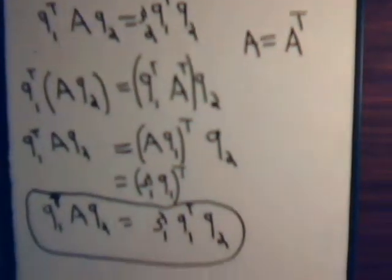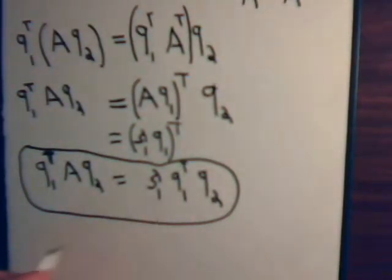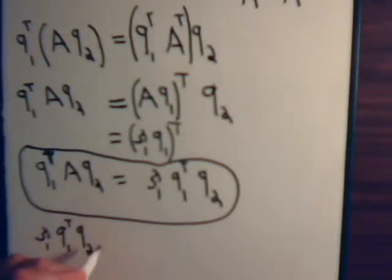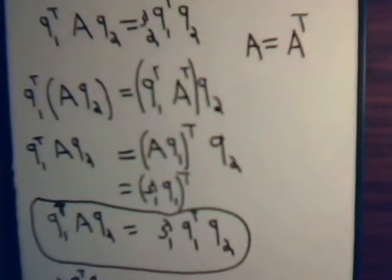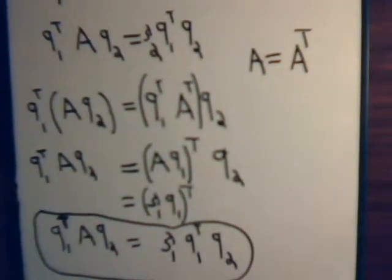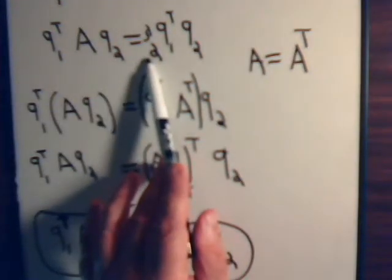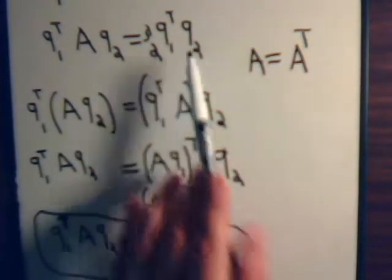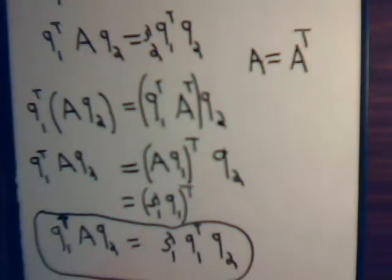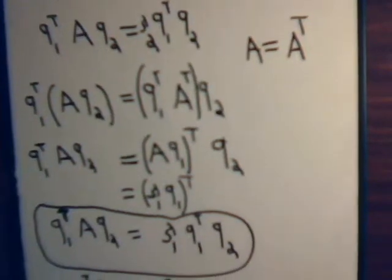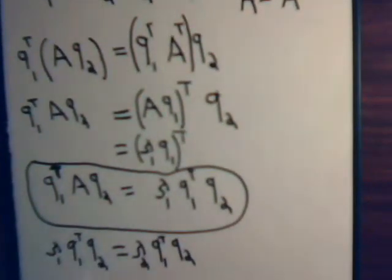So let's write it out like that. We have lambda 1 Q1 transpose times Q2 equals, right here, lambda 2 Q1 transpose Q2.